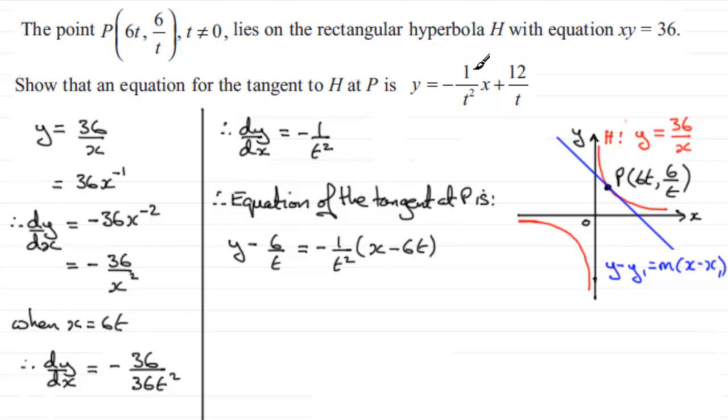Looking at the answer we need, I can see we've got minus 1 over t squared x. I can get that by expanding the bracket. So I'm going to expand the bracket and add 6 over t to both sides, leaving y equals 6 over t.